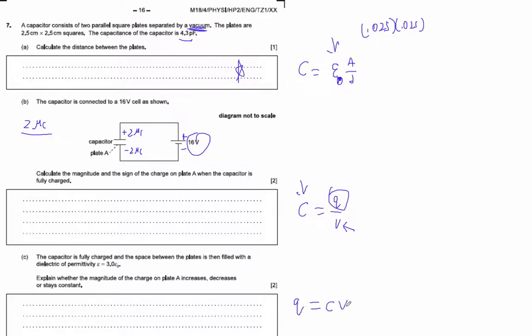Well, Q is CV, and this is going to increase. If we multiply this number by 3, the capacitance is multiplied by 3. So it's going to increase by a factor of 3. They just want to know increases or decreases—explain why.